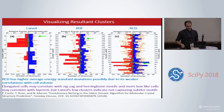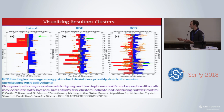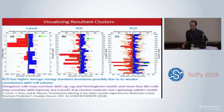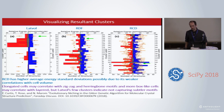On average, RCD has higher energy standard deviations, possibly due to its weaker correlation with cell volume. Elongated cells with zigzag and herringbone motifs are more likely to be correlated with layered cells. But the lattice parameter descriptor's few clusters indicate it does not capture more subtle motifs. There's a trade-off between capturing subtle motifs and determining what is truly a motif — it's hard to know how many clusters are an accurate number of motifs.